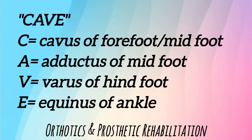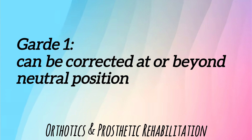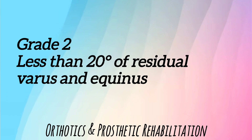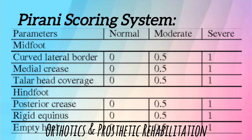For this we often use an acronym CAVE — C-A-V-E. According to Harold and Walker's grading system of clubfoot, there are three grades. Grade one is mild clubfoot deformity and it can be corrected at or beyond the neutral position. Grade two is moderate clubfoot deformity with less than 20 degrees of residual varus and equinus. Grade three represents severe deformity with more than 20 degrees of residual varus and equinus.